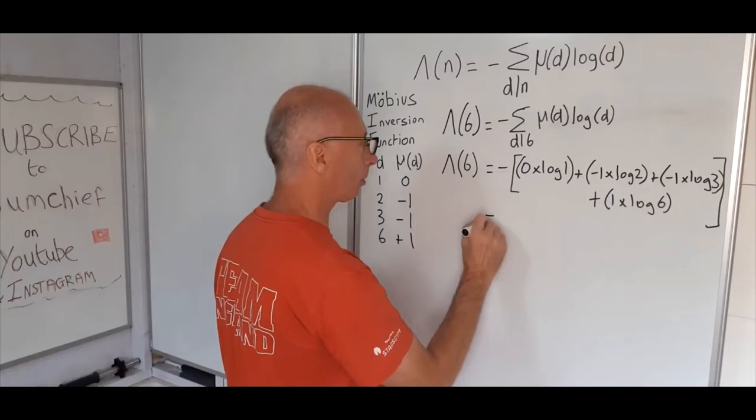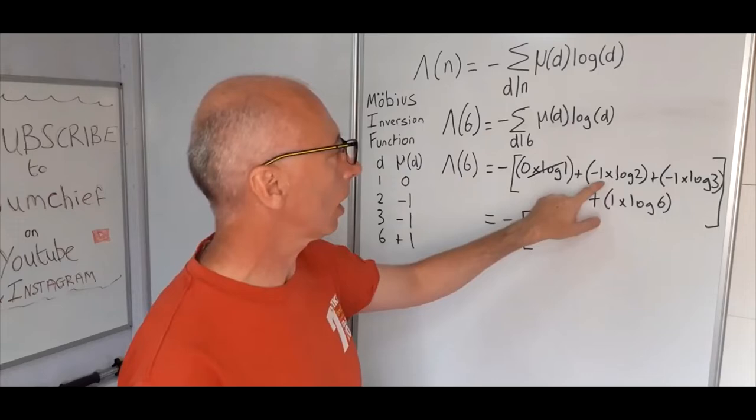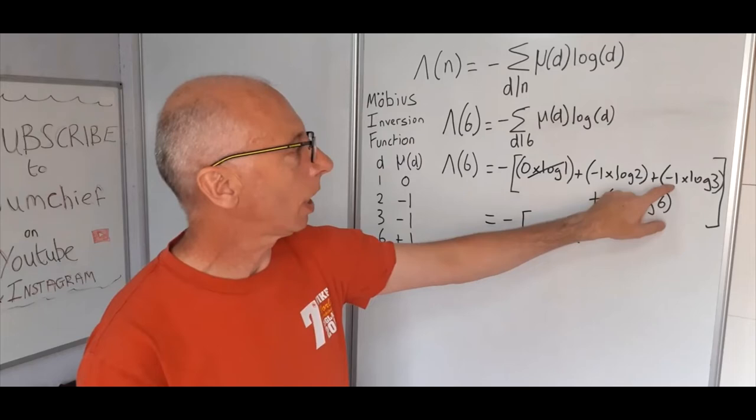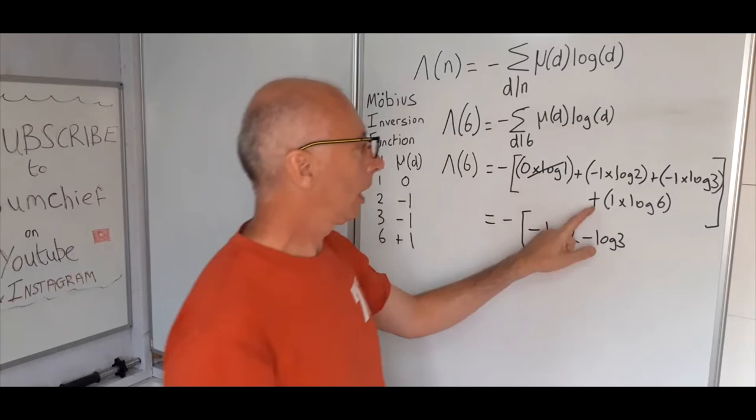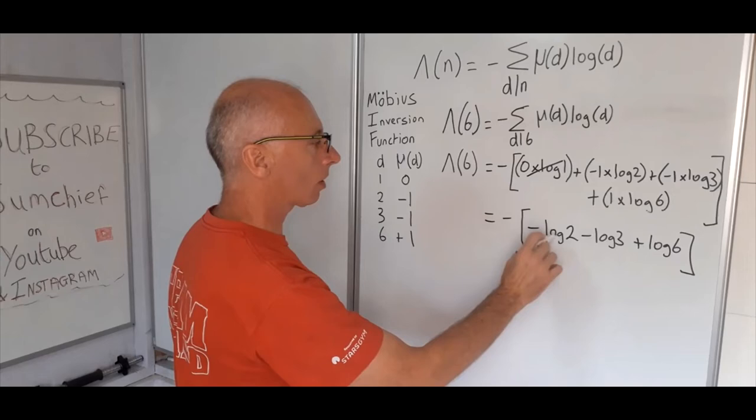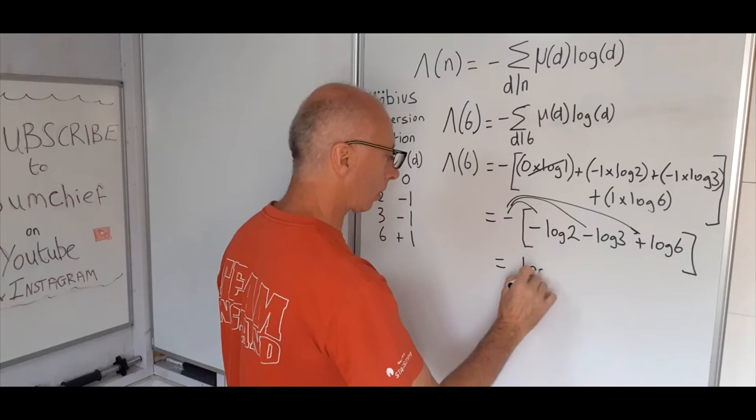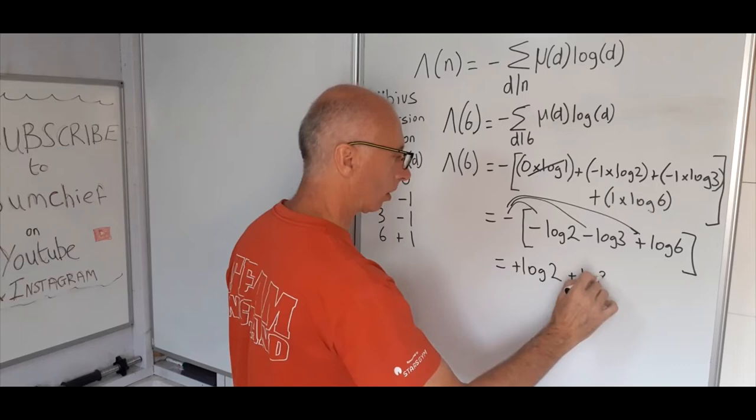Let's simplify this. The 0 times log 1 cancels out. Minus 1 times log 2 is minus log 2. Plus minus 1 times log 3 is minus log 3. Plus log 6. Distributing the minus sign into the bracket gives us positive log 2 plus log 3 minus log 6.